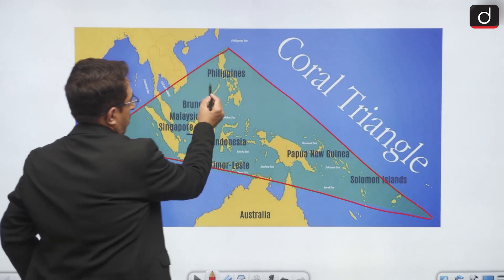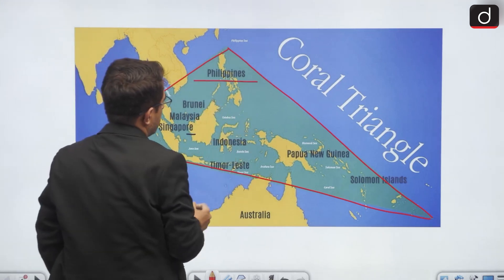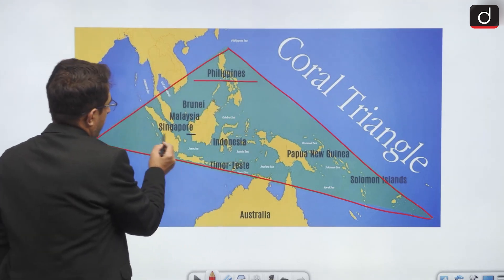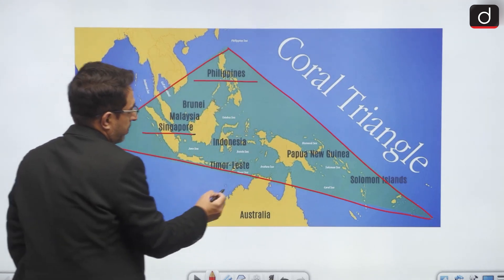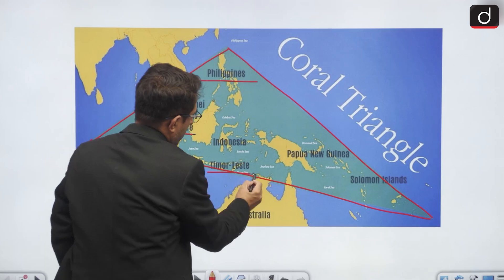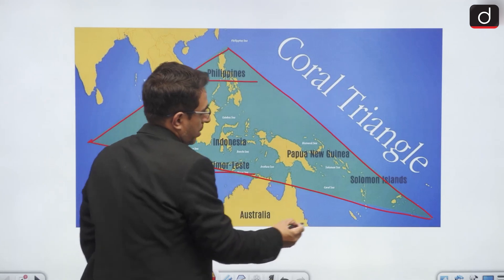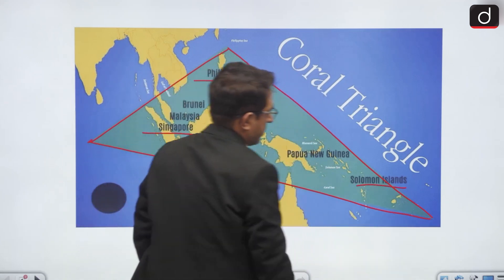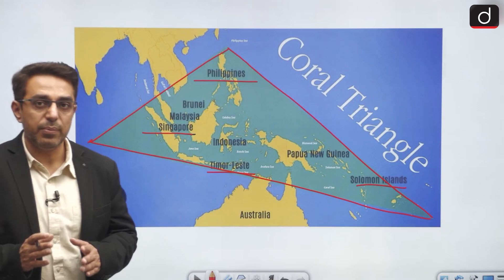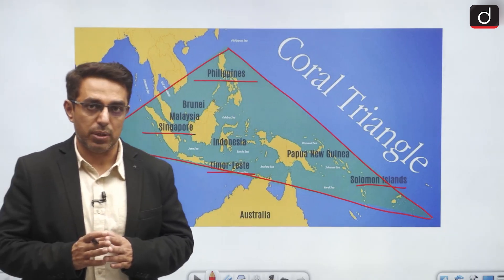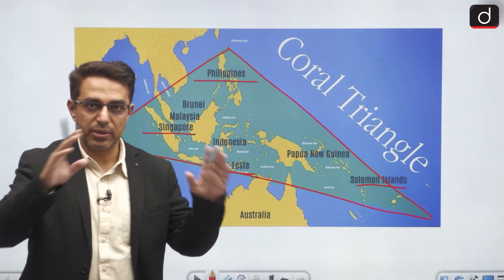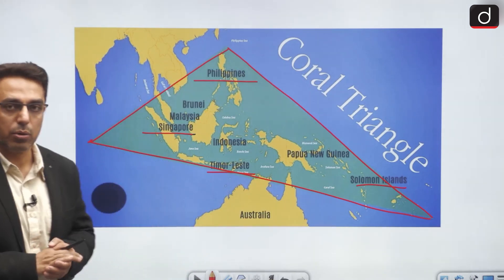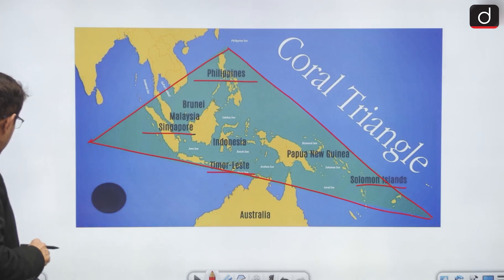Here we can see we have Philippines at one corner, then Singapore, Timor-Leste, and Solomon Islands. The place is very rich in corals and it forms a triangular area, so it is known as the Coral Triangle.